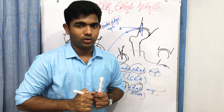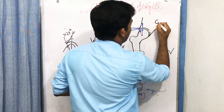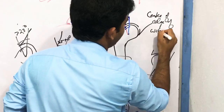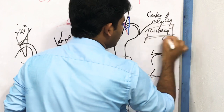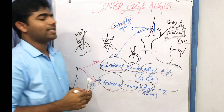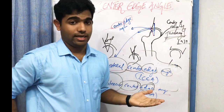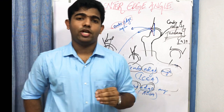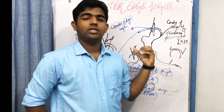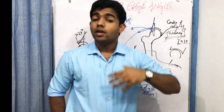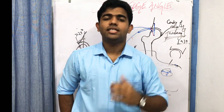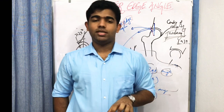This angle is also known as the center edge angle of Wiberg, named after the scientist who described it in 1939. These measurements are very important in radiographic findings — with radiographs, we can examine whether a patient has dysplasia or femoro-acetabular impingement, whether it is possible dysplasia, definite dysplasia, or pincer impingement.